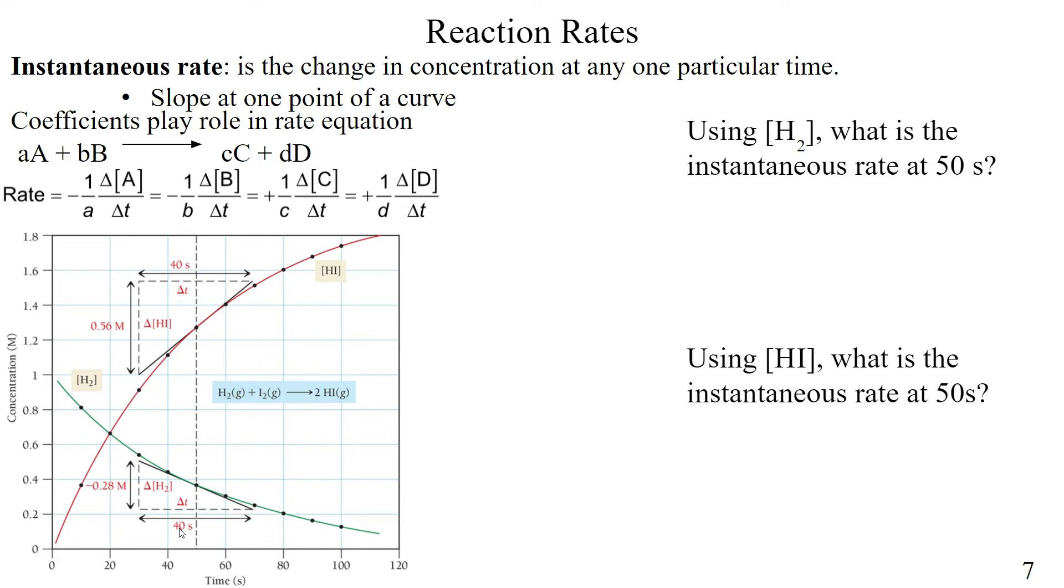Now what are we going to do in regards to our concentration? We're just going to see the change in concentration. We're going to look at this point, and then we're going to look at this point, and then we're going to see the change here. We saw a change in concentration of negative 0.28 molar. And then our 40 seconds, that's going to give me my rate of 0.0070 molar over seconds.